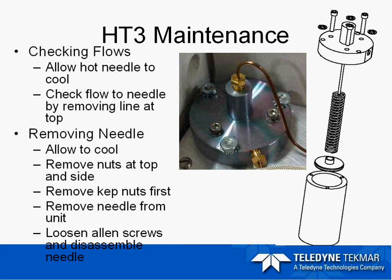Another issue discussed is the sample needle possibly being clogged with septa or blocked. When checking the flows, we want to make sure we cool the instrument down before removing any fittings so we don't snap them. To remove the HT3 needle, remove the lines at the top and the side, then remove the three hex nuts — this allows you to take the needle out of the unit before you disassemble it. After it has been removed, you can remove the three Allen screws to disassemble the needle from the spring and the housing. If you loosen the Allen screws first, the spring and other parts would fall down inside the unit.